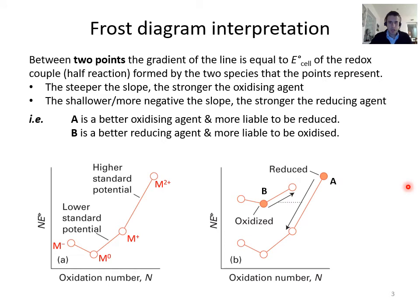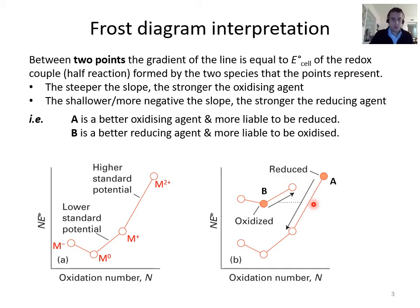If you compare two species A and B reacting together, you can look at their frost diagram gradients to predict the outcome. If A has a steeper gradient, A is likely to be reduced and B oxidized. Subtracting the two gives a positive E_cell, which means a negative ΔG — so the reaction is spontaneous. Straight away we can predict which reactions will occur, making this a very useful approach.